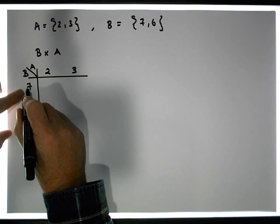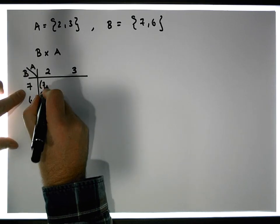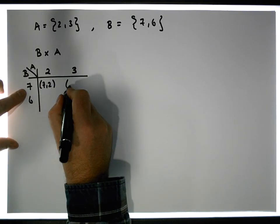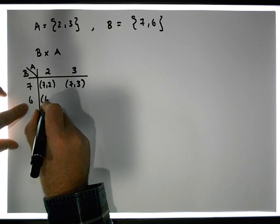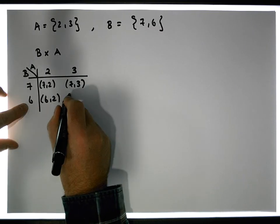So the ordered pairs are 7 gets paired with 2, 7 gets paired with 3, 6 gets paired with 2, and 6 gets paired with 3.